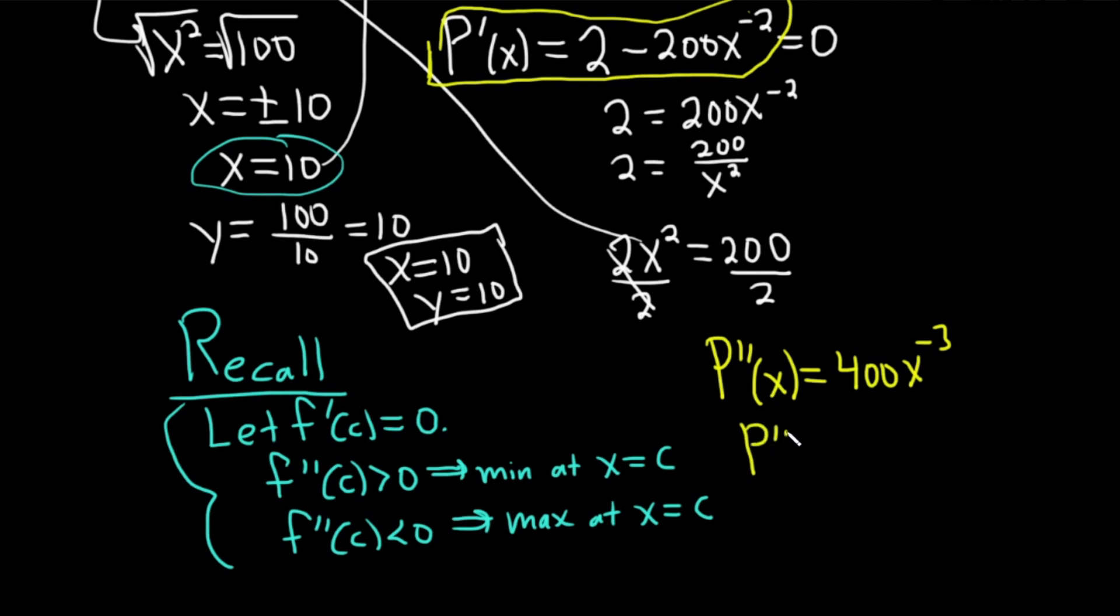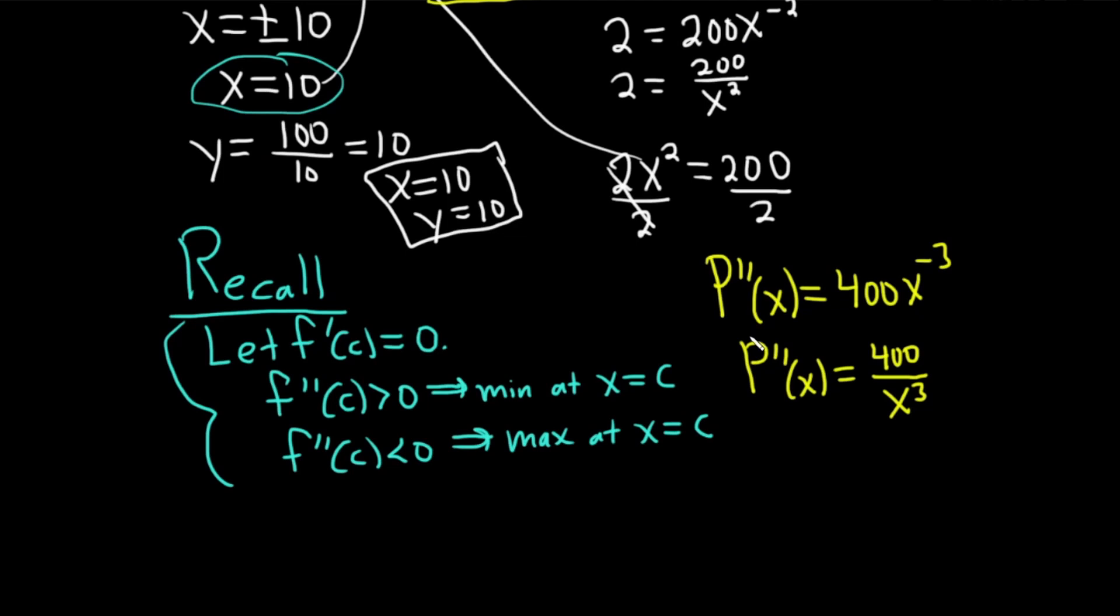And so now we actually plug in the 10. So P double prime of 10 is equal to 400 over 10 cubed. And it doesn't matter what number this is, it just matters that it's positive. So we have a, remember it's backwards, if it's positive, you have a min. So we have a min at x equals 10.